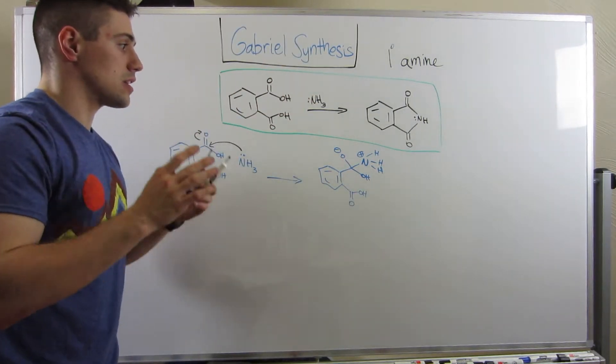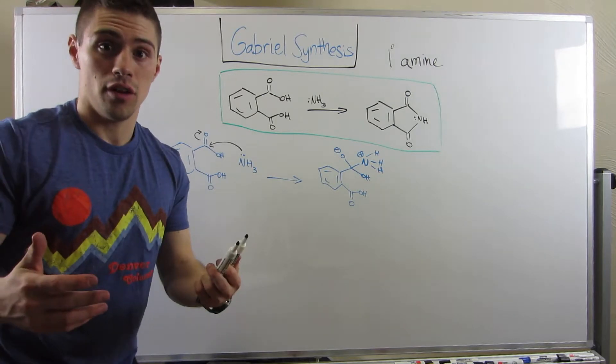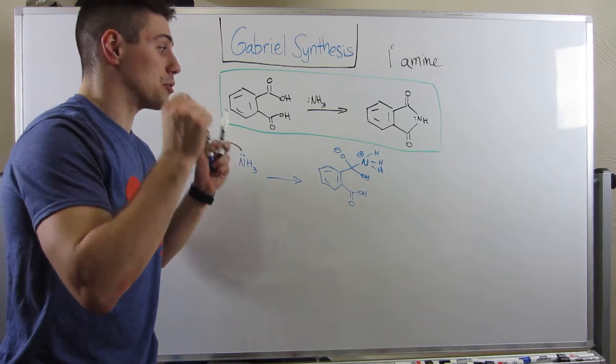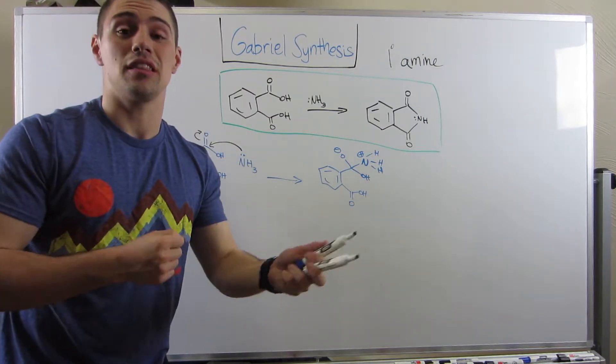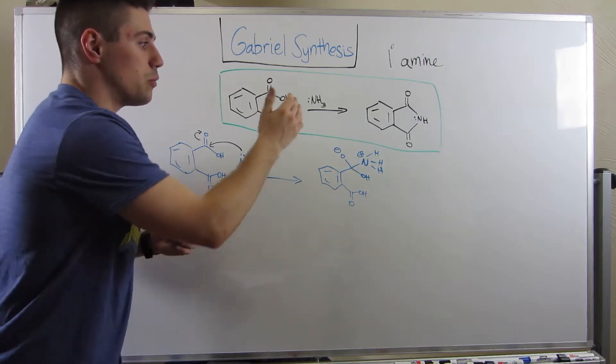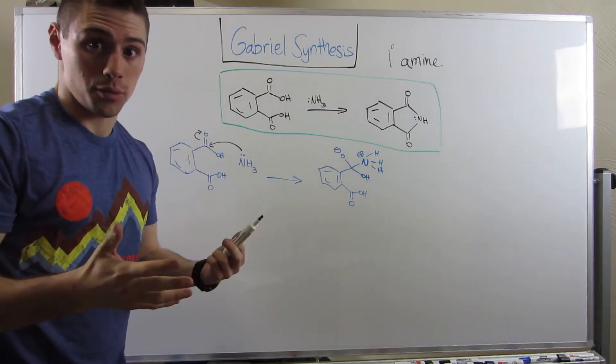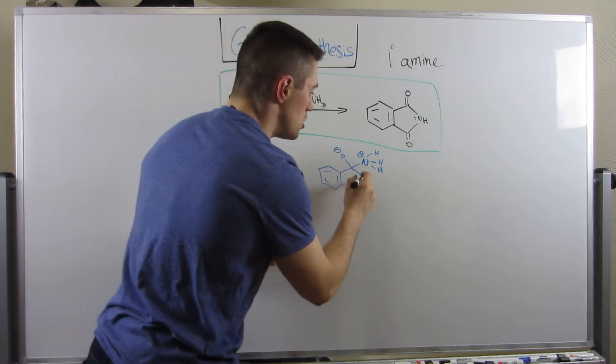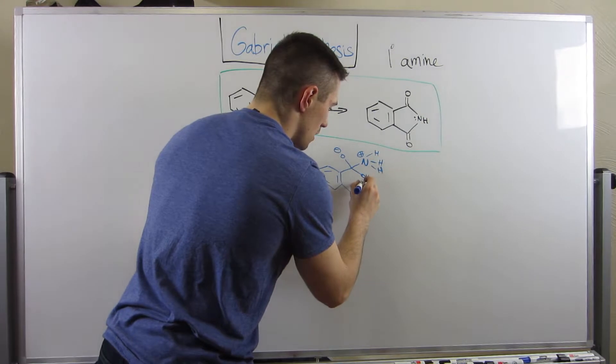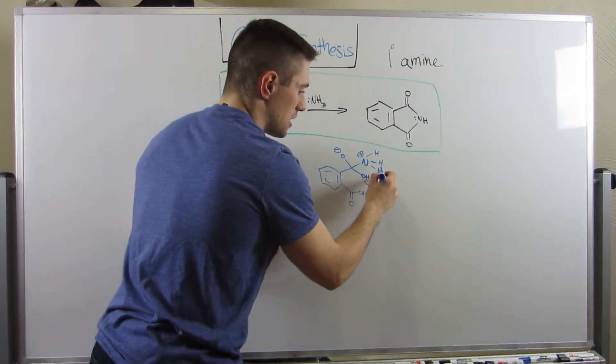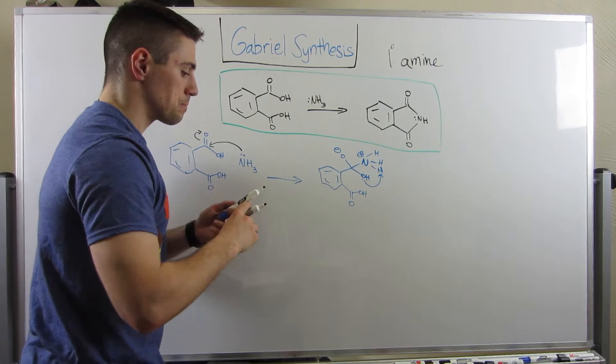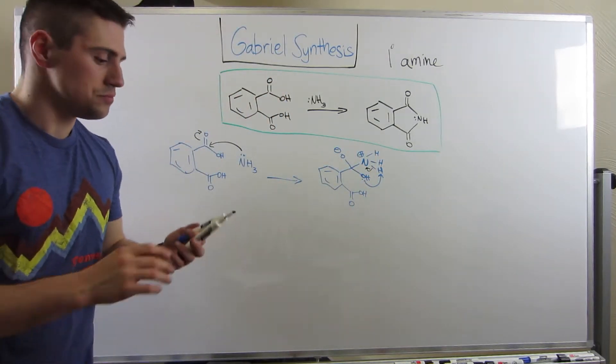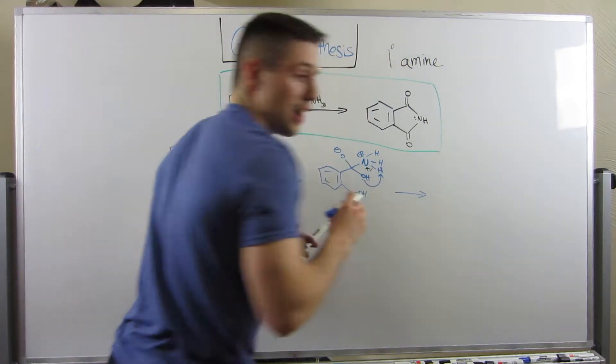Now remember, we want to protonate the things we want to get rid of. We want to deprotonate the things we want to keep. So we want nitrogen to stay. Let's deprotonate him. We want this OH to leave. Let's get rid of them. I'm going to do this intramolecular acid-base reaction. So I'm going to have this oxygen sneak up and grab one of these hydrogens. And then I'm going to dump the electrons onto nitrogen, just to make it simple. Totally fair game to do.